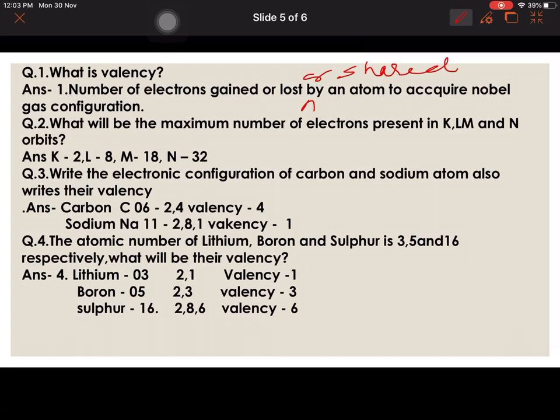Question 3: Write the electronic configuration of carbon and sodium atom, also write their valency. Carbon atomic number 6: 2, 4, valency 4. Sodium 11: 2, 8, 1, valency 1.